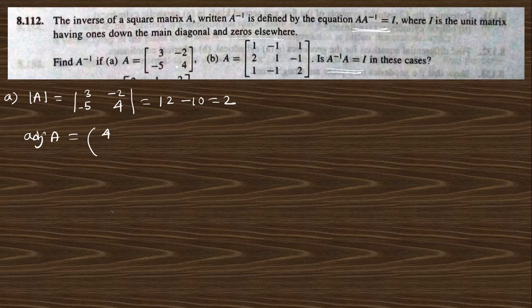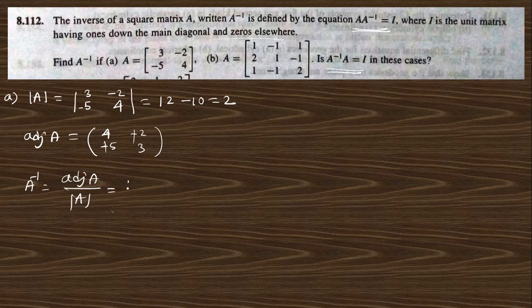For question A, to find A⁻¹ we first find det(A). The matrix is 2×2, and det(A) = 12 - 10 = 2. Then adjoint A: for entry 3, cofactor is 4; for entry -2, cofactor is -5; for -5, cofactor is -2; for 4, cofactor is 3. So adjoint A = [4, 2; 5, 3], and A⁻¹ = (1/2) × [4, 2; 5, 3].